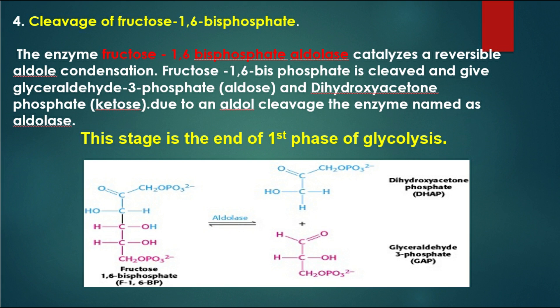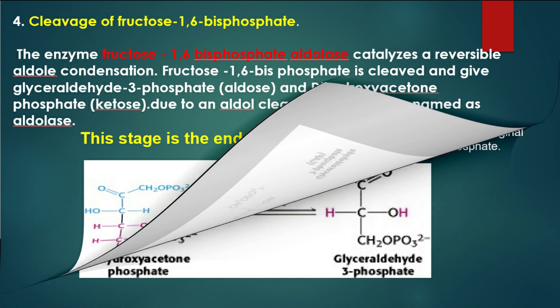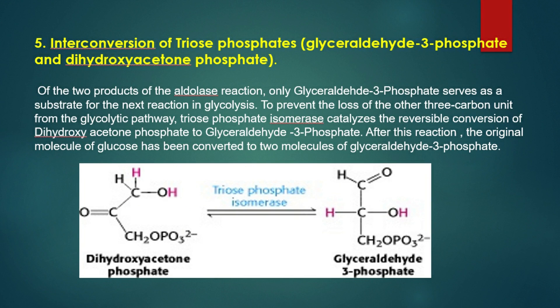Fourth reaction is the cleavage of fructose-1,6-bisphosphate. In this reaction, enzyme fructose-1,6-bisphosphate aldolase cleaves fructose-1,6-bisphosphate into two triose molecules: dihydroxyacetone phosphate and glyceraldehyde-3-phosphate. The 5th reaction in glycolysis is the interconversion of triose phosphates. After the aldolase reaction, only glyceraldehyde-3-phosphate serves as a substrate in the next reaction. So to prevent the loss of the other three-carbon molecule, triose phosphate isomerase enzyme converts dihydroxyacetone phosphate to glyceraldehyde-3-phosphate. This reaction is a reversible conversion. After this, one molecule of glucose has been converted to two molecules of glyceraldehyde-3-phosphate.